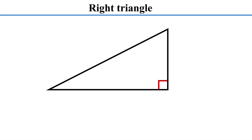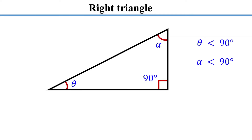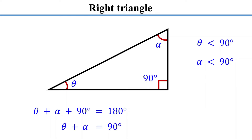A right triangle has one angle measuring 90 degrees, which is represented by a small square in the corner. The other two angles are acute, meaning they are less than 90 degrees. The sum of all angles in any triangle always adds up to 180 degrees, so in a right triangle, the sum of the two acute angles is 90 degrees.